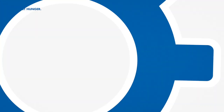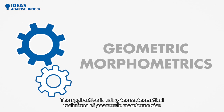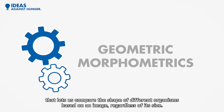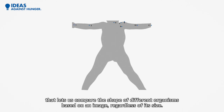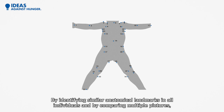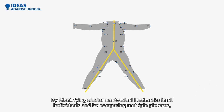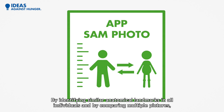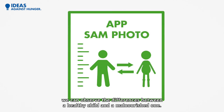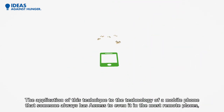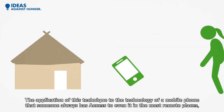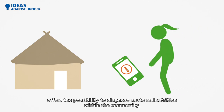The Idea. The application uses the mathematical technique of geometric morphometrics, which lets us compare the shape of different organisms based on an image regardless of its size. By identifying similar anatomical landmarks in all individuals and comparing multiple pictures, we can observe the difference between a healthy child and a malnourished one. Applying this technique to mobile phone technology — something someone always has access to even in the most remote places — offers the possibility to diagnose acute malnutrition within the community.